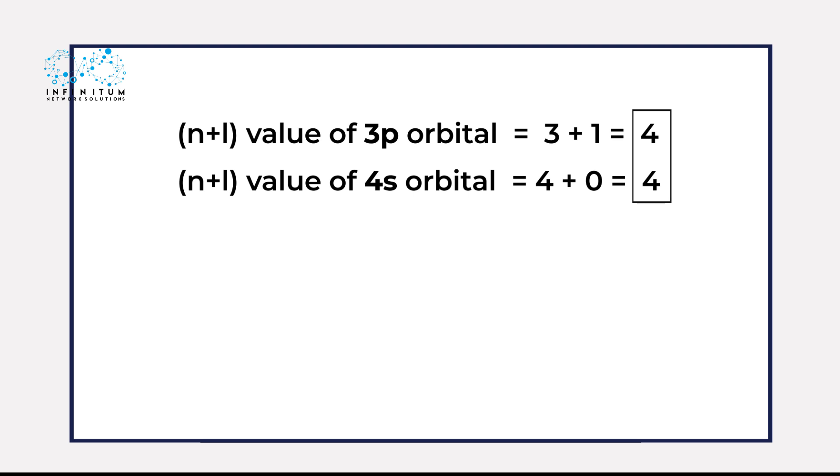This means that both the orbitals have the same n plus l value, but the 3p orbital has an n value that is 3, which is less than the n value of 4s, which is 4.